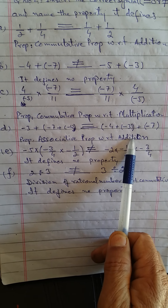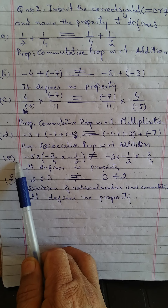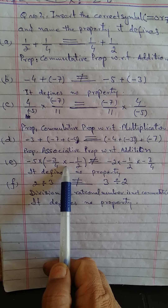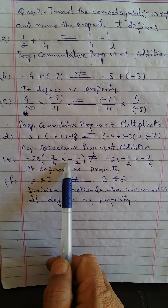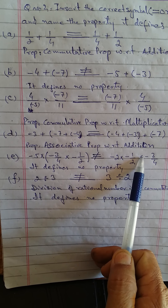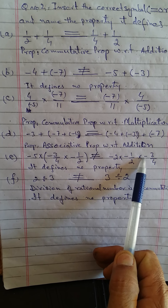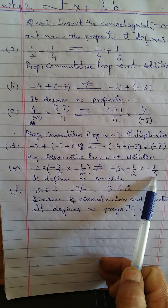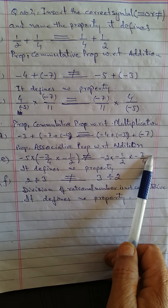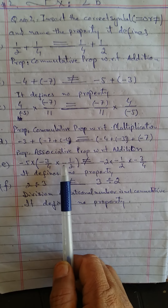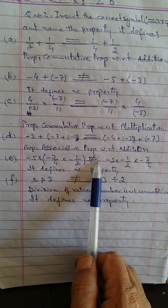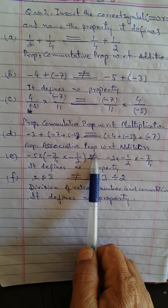Part number E: minus 5 multiply by minus 3 over 4 multiply 1 over 2, blank, minus 2 multiply minus 1 over 2 multiply by minus 3 over 4. This will not be equal because the numbers on both sides are different, so it defines no property — no property is used here — and the answers will not be the same, so an inequality sign will come here.